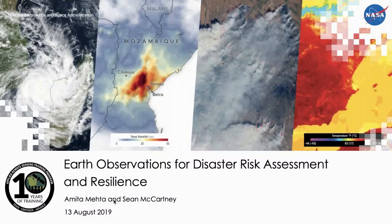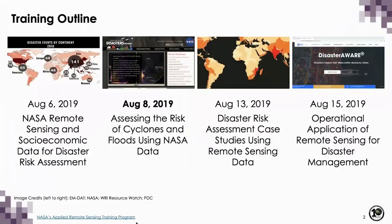Welcome back everyone. This is the second week of Earth Observations for Disaster Risk Assessment and Resilience. Last week we had an overview of NASA remote sensing data as well as socio-economic data from CDAC for disaster risk assessment. Today we are going to focus on using some of those data sets for actually doing disaster risk assessment, and we're going to focus on cyclones and floods. We'll be using NASA remote sensing data as well as CDAC data that we saw last week.